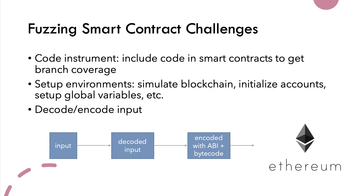We also need to set up the environment. For example, we have to simulate the blockchain to execute transactions with town miners, initialize accounts with some balances, and set up global variables such as block number or block timestamp. We also have to provide an input format, and write a decoder and encoder to make sure that the EVM can understand and execute that input.